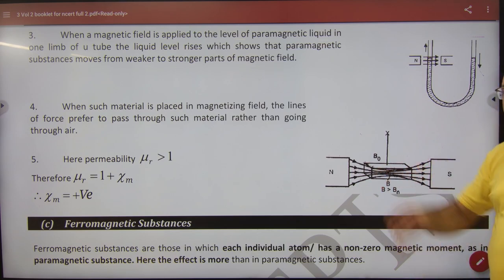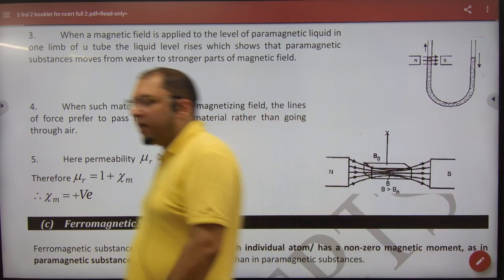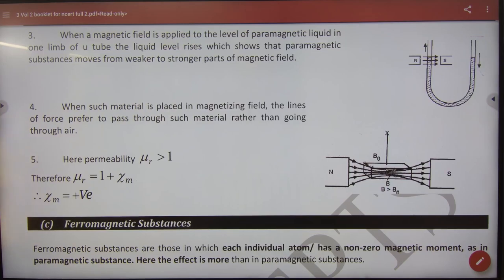Magnetic lines of force pass through it, whether it is para or ferro. Note this please: their μr (para or ferro) is greater than one. Because it is greater than one, chi is positive.